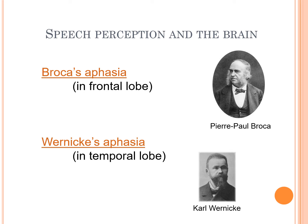I encourage you to pause and think about the differences between Broca's aphasia and Wernicke's aphasia, and what that tells us about what those brain regions do in speech perception. Some of this is also about production — what's coming out of their mouths — but what does this mean for what they understand and hear in speech?